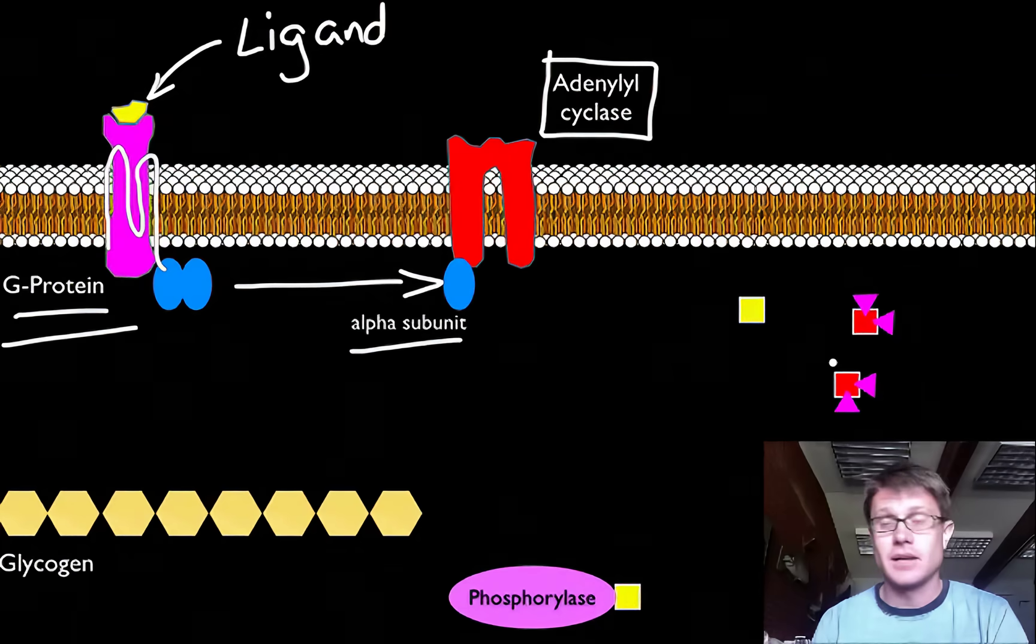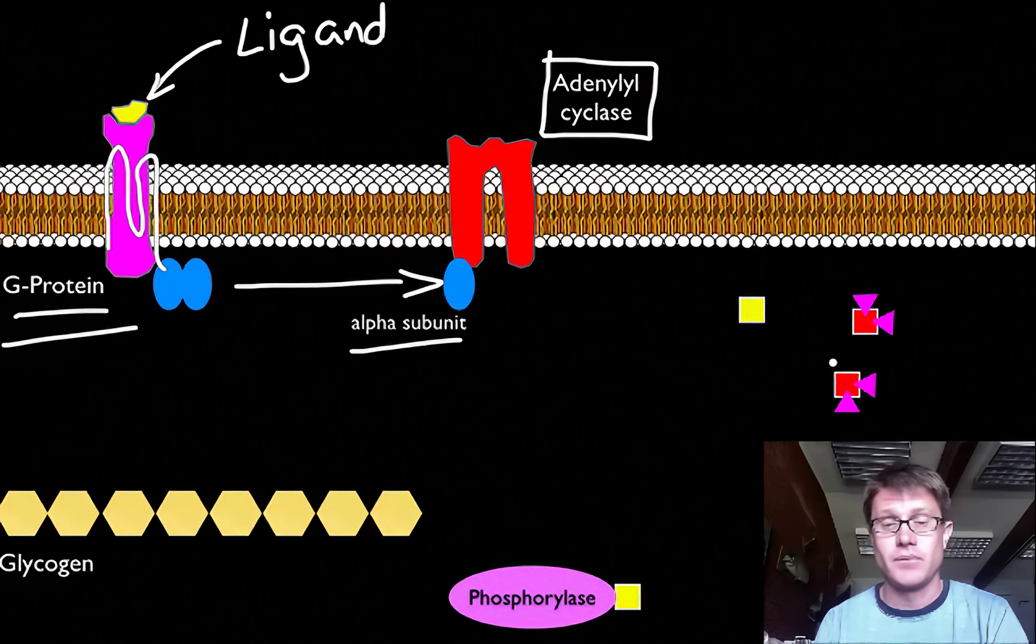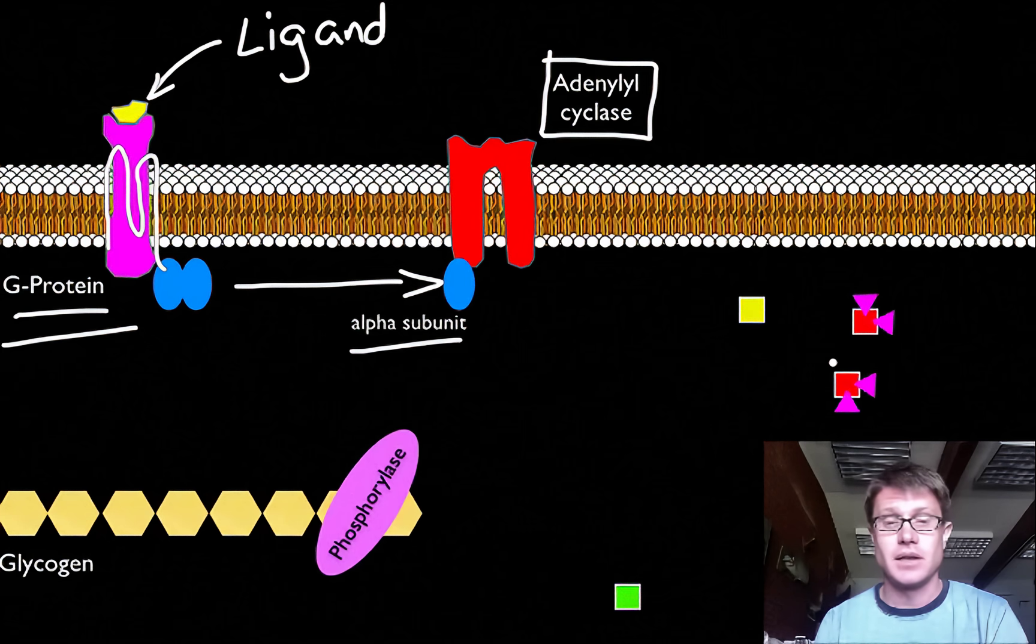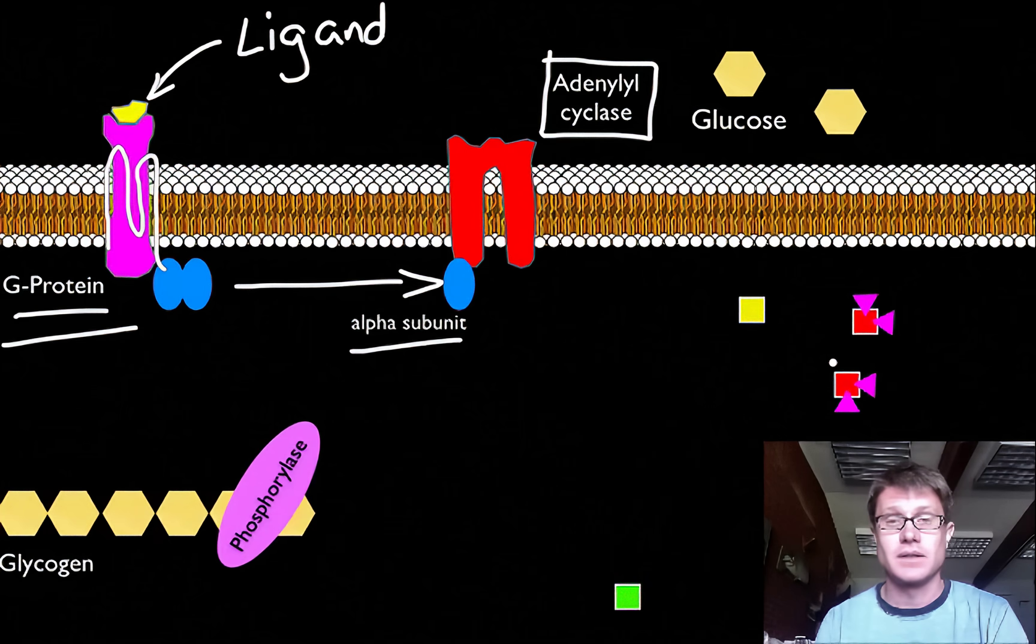They then can act on enzymes within the cell. Sometimes they'll act through a number of different molecules within the cell. In this case it's going to drop off that phosphate to phosphorylase and it's going to activate phosphorylase so it can release glucose from glycogen within the cell.